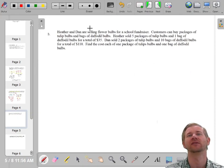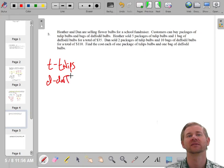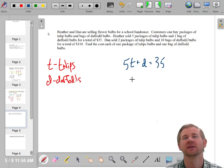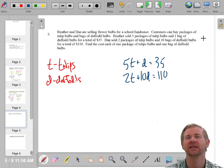This says Heather and Dan are selling flower bulbs. And you can buy a package of tulips. So T for tulips. How many bags of tulips do we sell? And D for daffodils. Five packages of tulip bulbs and one package of daffodil bulbs cost $35. Two packages of tulip bulbs and 10 packages of daffodil bulbs are $110. See how we're just reading this English and we're making it a math equation.